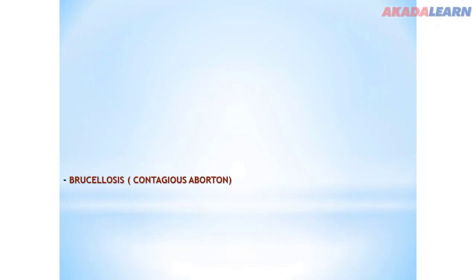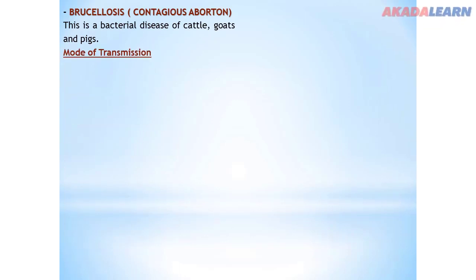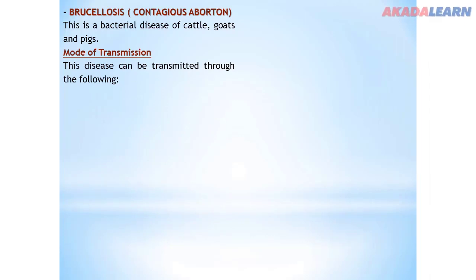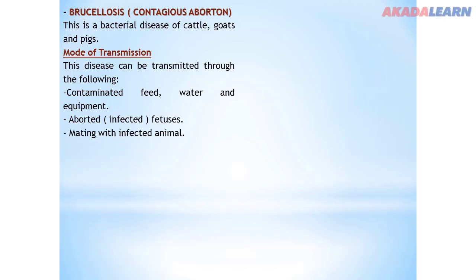The next bacterial disease is brucellosis, also known as contagious abortion. Brucellosis is a bacterial disease that affects cattle, goats, and pigs. Modes of transmission include: contaminated feed, water, and equipment; aborted or infected fetuses; and mating with an infected animal — either male or female, as brucellosis affects both.